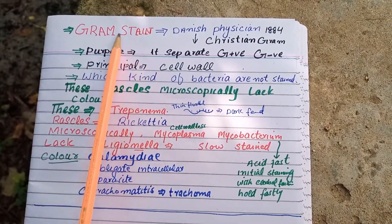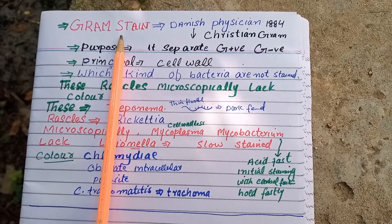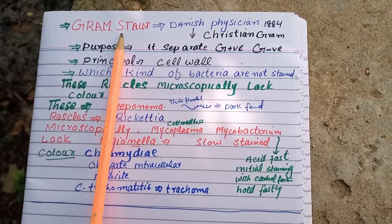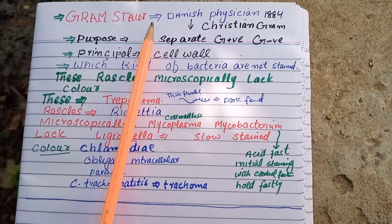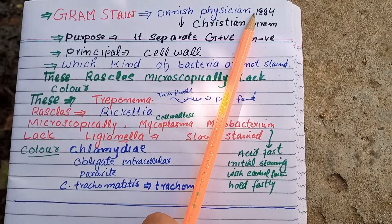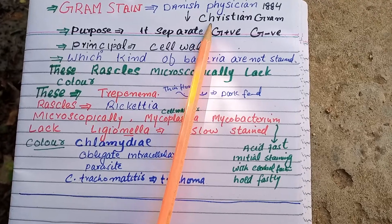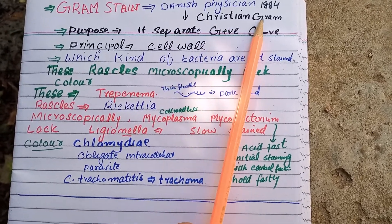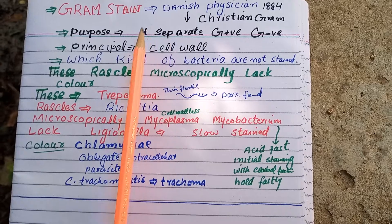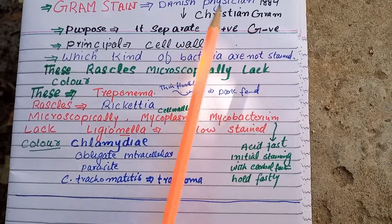Bismillahirrahmanirrahim. In today's lecture I am going to discuss about Gram staining. Gram staining is a procedure that was introduced by a Danish physician in 1884 called Christian Gram. The purpose of Gram staining is that it separates Gram positive and Gram negative bacteria.